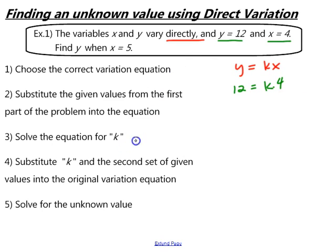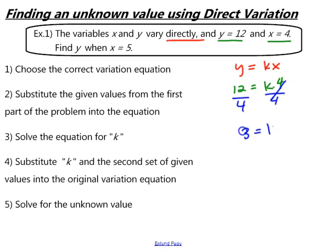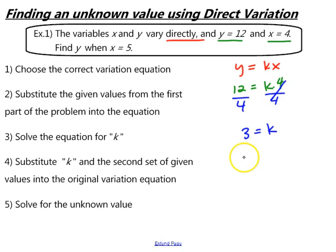We want to solve the equation for k, our constant of variation. So we divide both sides by 4, and we get k equals 3. This tells us that x and y vary directly with a constant of 3. So the equation that relates all the variables x and y in this problem is y equals 3x.